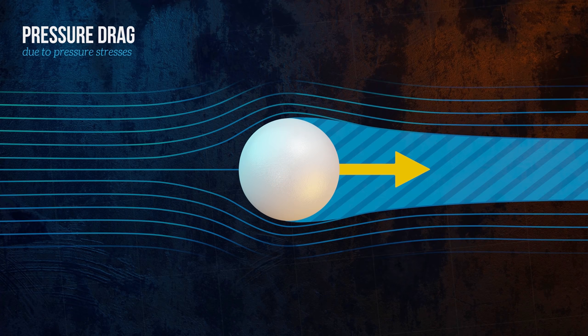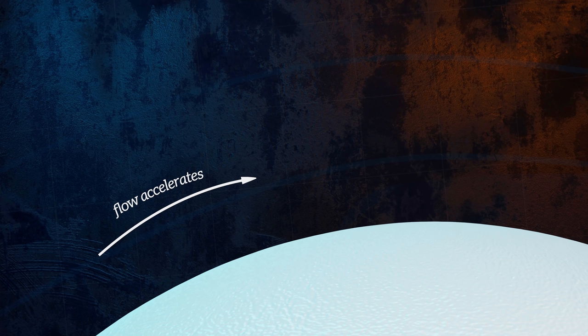To understand why flow separation occurs, let's look at flow on the upper surface of the sphere. As the fluid passes over the surface of the sphere, it is initially accelerating, and so pressure is decreasing in the direction of the flow. This is called a favorable pressure gradient.